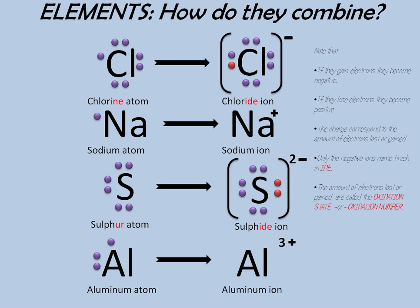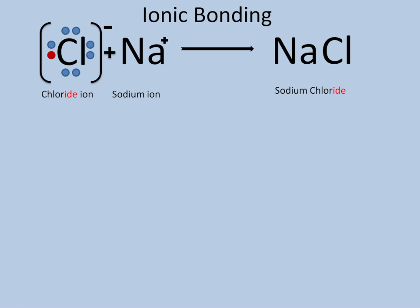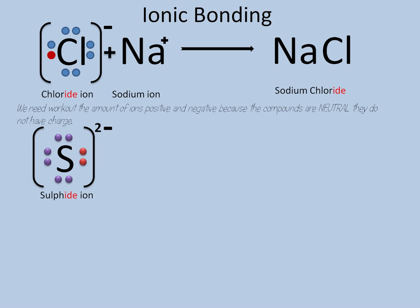The number of electrons lost or gained is also called the oxidation number or oxidation state, and it is going to help us build the compounds. For ionic bonding, when we have the chloride ion — which is negative — it is going to combine with the sodium ion to form what we call sodium chloride. Notice that we have only one charge negative and one positive, so we can form the compound with just one sodium and one chloride, since the amount of charges must be exactly equal. This is straightforward when we have one and one, but when the positive and negative ions have different amounts of charges, it is a little more difficult to work out.